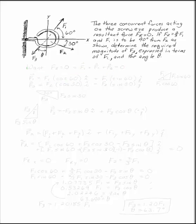The three concurrent forces acting on the screw-eye produce a resultant force Fr equals zero. If F2 is two-thirds of F1 and F1 is 90 degrees away from F2, as shown, determine the required magnitude of F3 expressed in terms of F1 and the angle theta.